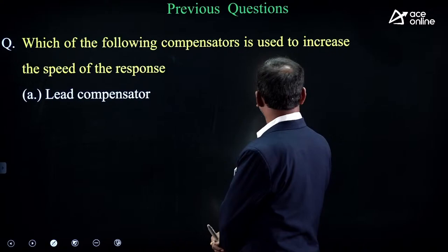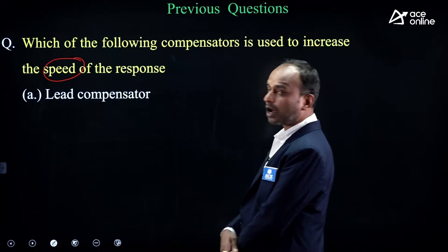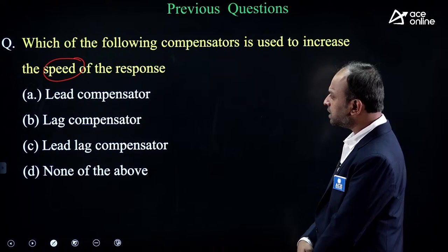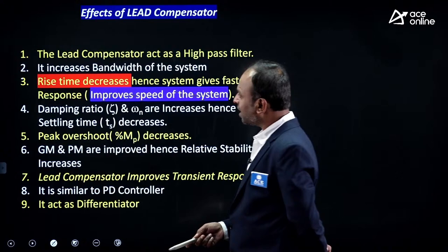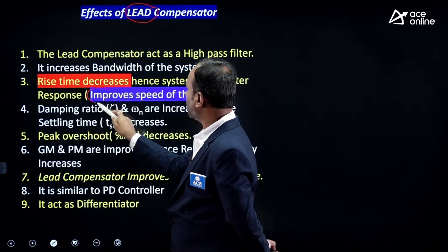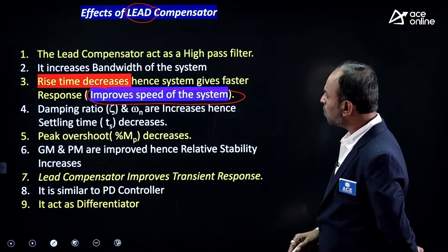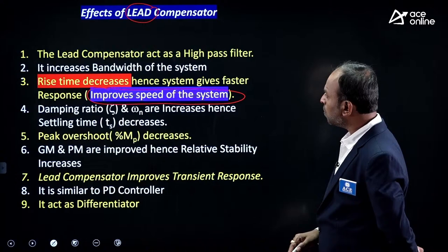Final question: which compensator improves the speed of the system? Lead compensator improves the speed of the system. So the correct answer is the lead compensator.